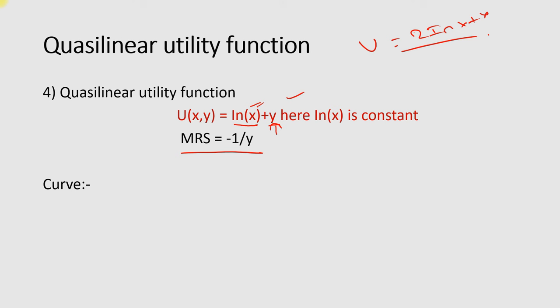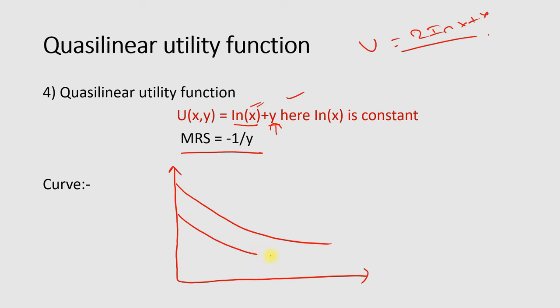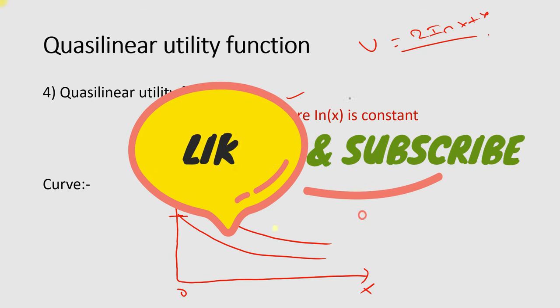There is no shortcut in the case of the quasi-linear utility function to find the marginal rate of substitution. If you draw a quasi-linear utility function graph it will look like this. The consumer does not care about the quantity of x and is only interested in the quantity of y. As you can see, the indifference curve is strictly convex and the marginal rate of substitution is diminishing. Please like and subscribe to my channel — see you soon!